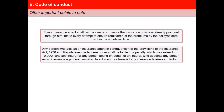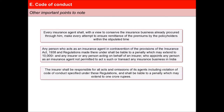Any person who acts as an insurance agent in contravention of the provisions of the Insurance Act 1938 and regulations made thereunder shall be liable to a penalty which may extend to Rs. 10,000. Any insurer or any person acting on behalf of an insurer who appoints any person as an insurance agent not permitted to act — the insurer shall be responsible for all acts and omissions of its agents including violation of code of conduct specified under these regulations and shall be liable to a penalty which may extend up to Rs. 1,000,000.